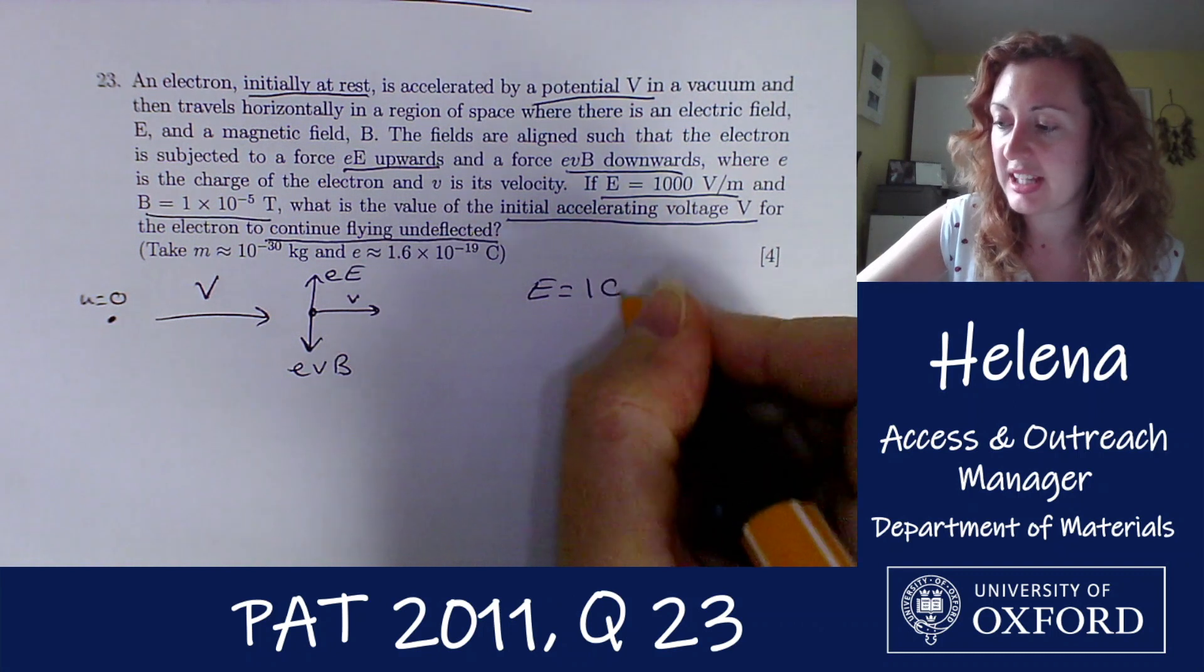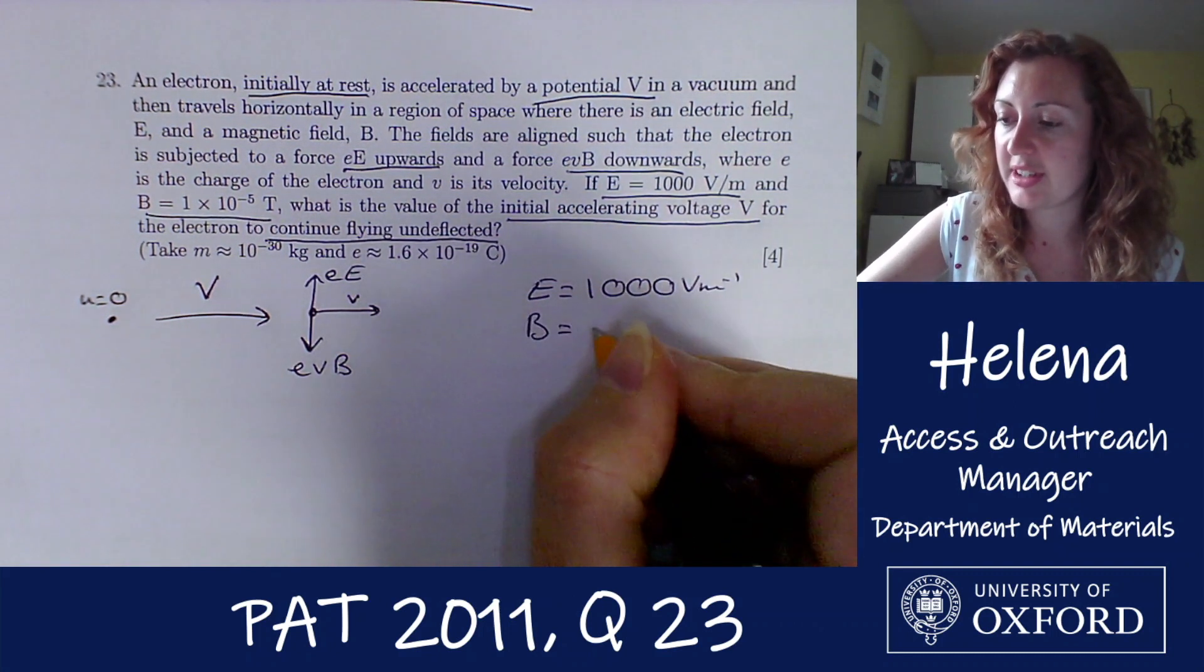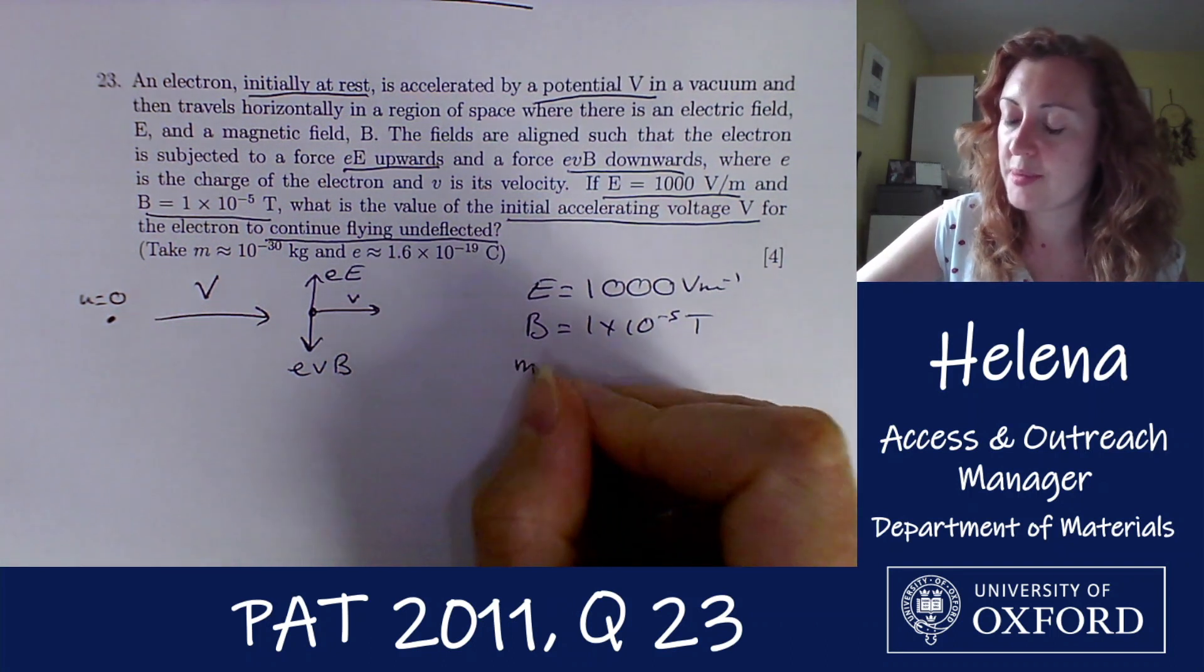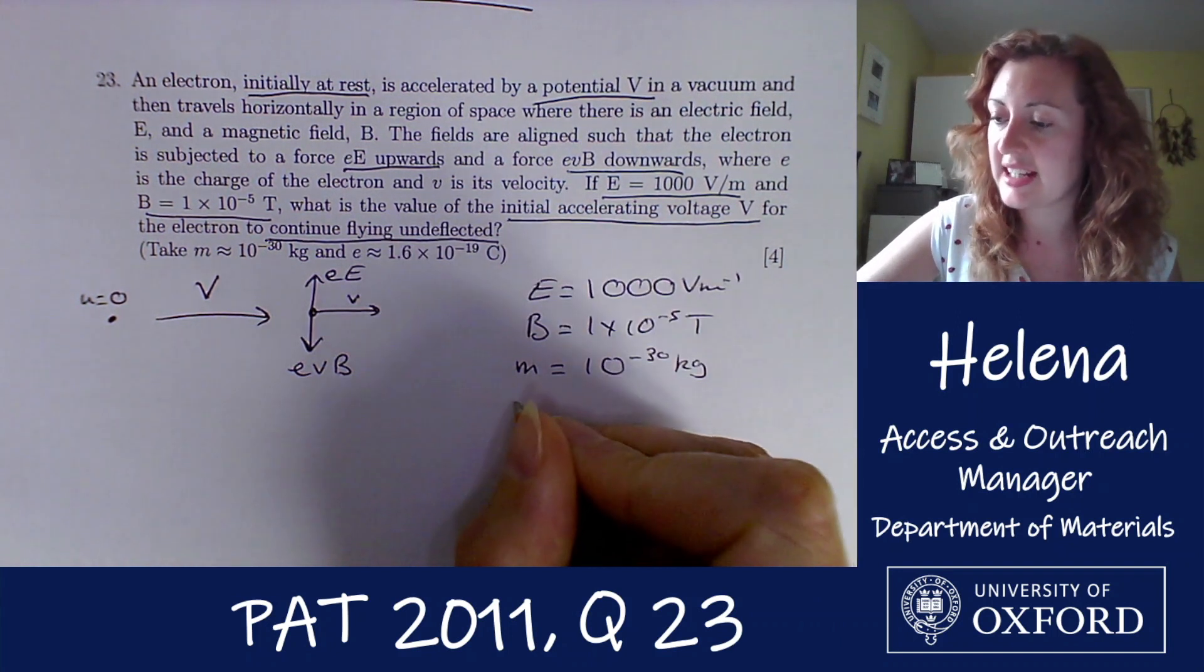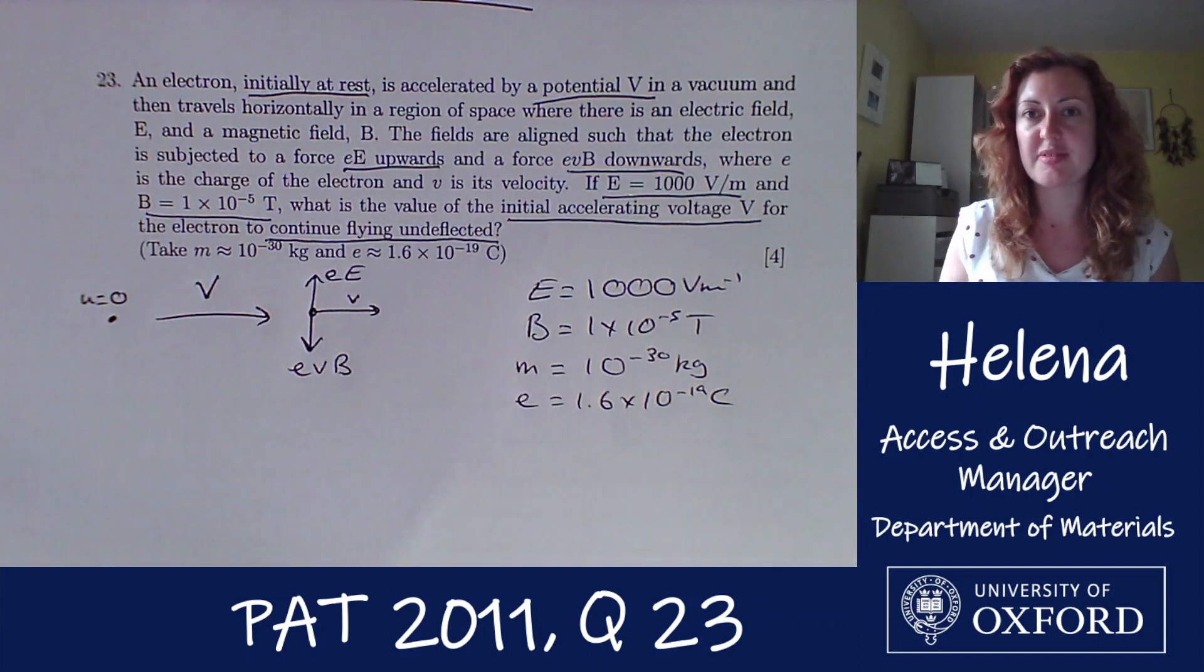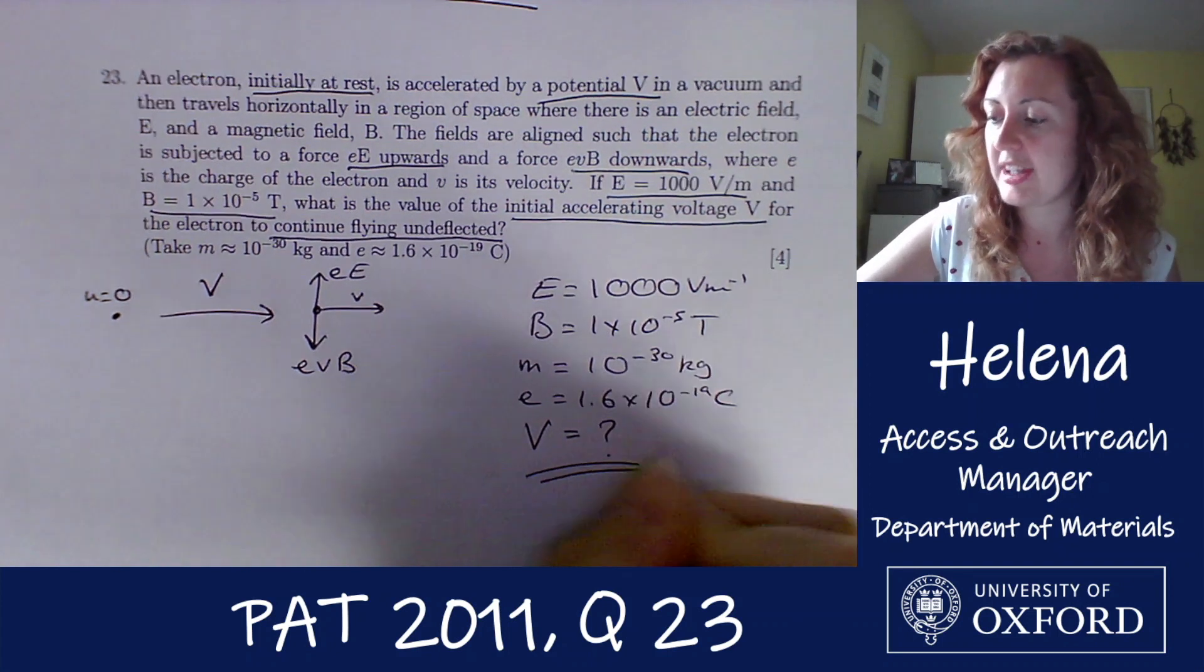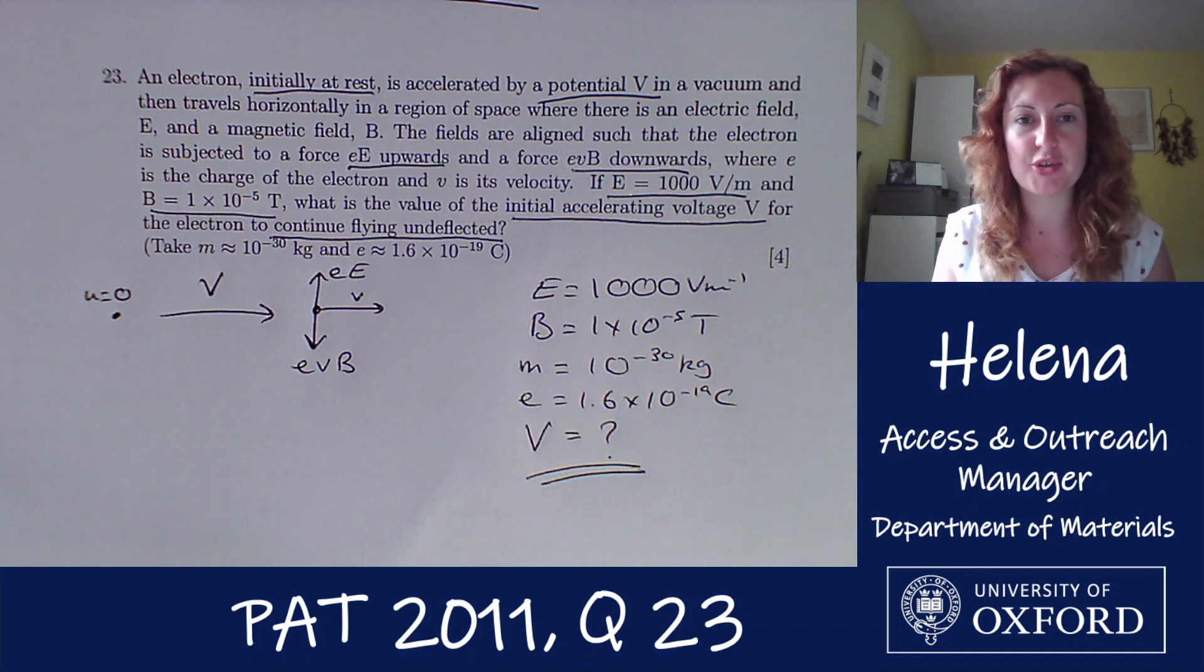So we're told that the electric field E equals 1000 volts per meter. The magnetic field B is 1 × 10^-5 tesla. We're also told the mass of the electron being 10^-30 kilograms and its charge 1.6 × 10^-19 coulombs. And what are we trying to find? We're trying to find its initial accelerating voltage V. Okay, so we've set up our problem. We know what we're trying to find, so let's get to solving it.